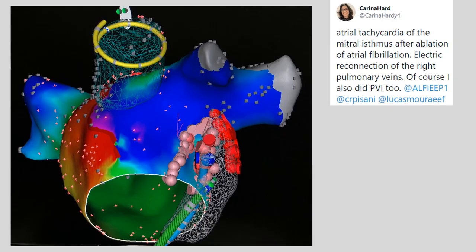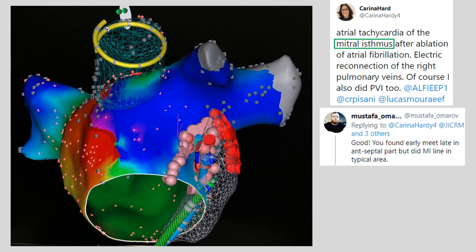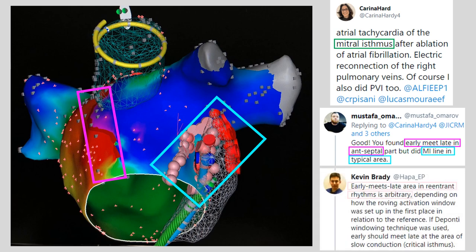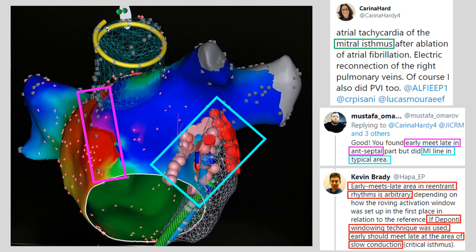One of the motivations for this topic came from a specific tweet from Dr. Hardy, where she posted a picture of a mitral flutter ablation she had performed. One of the responses pointed out that she found the early-meets-late boundary at the anteroseptal part of the left atrium, yet she created an ablation line at the typical lateral part of the left atrium between the mitral annulus and the left pulmonary veins. The response noted that the early-meets-late location is arbitrary in atrial flutter. If you set up a Duponti window, then the early-meets-late might be in an area of slow conduction, which might more likely coincide with where you perform the ablation. So the question is: what is this Duponti window, and what is this arbitrary nature of the early-meets-late line in atrial flutter?